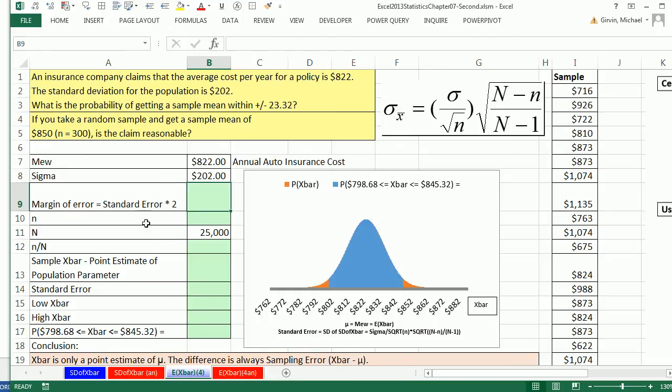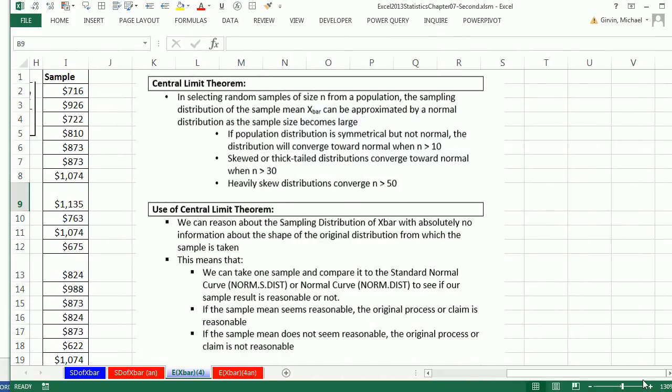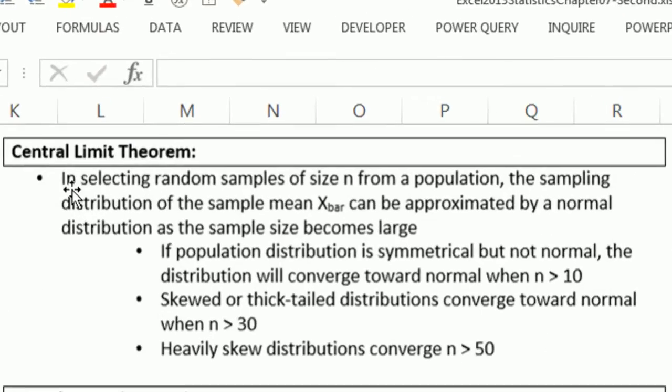We've got to talk about our last example for chapter 7 and talk about the central limit theorem. We've already done a bunch of examples using the central limit theorem, but let's review and do one last example for chapter 7 before we move on to chapter 8. In selecting a random sample of size n from a population, the sampling distribution of x-bar, or sample means, can be approximated by the normal distribution as sample size becomes larger.